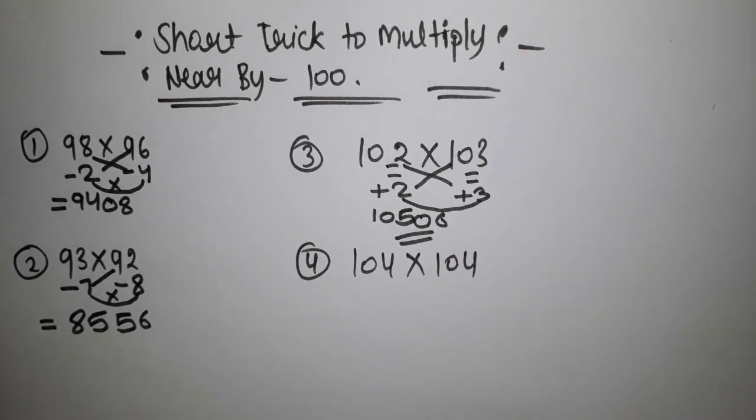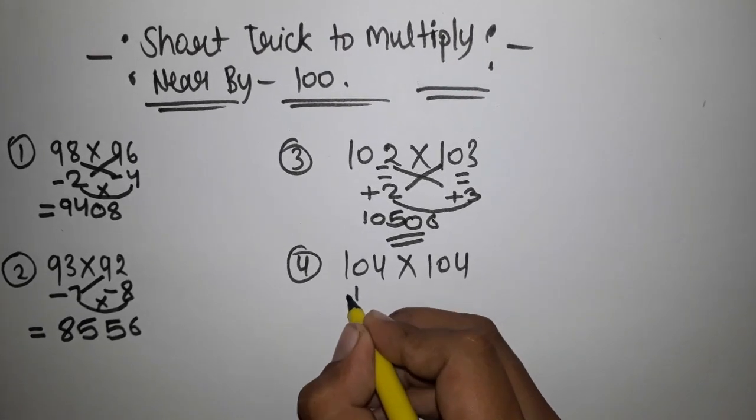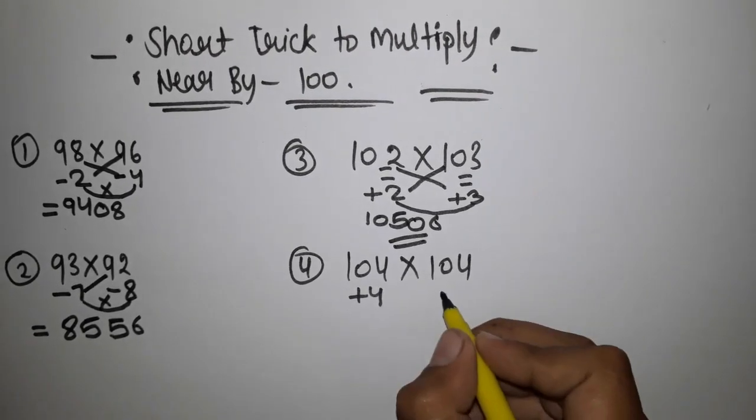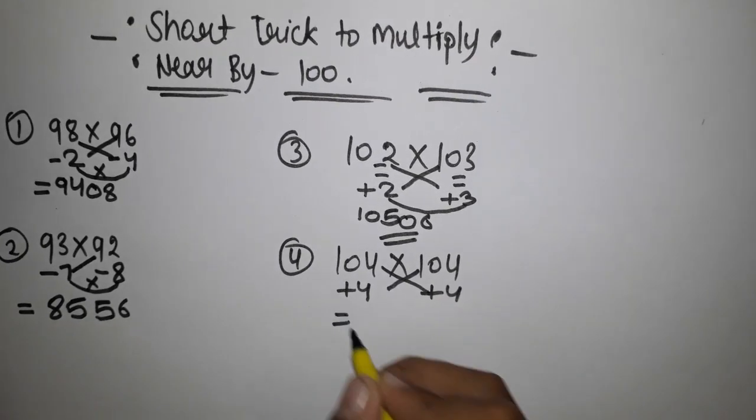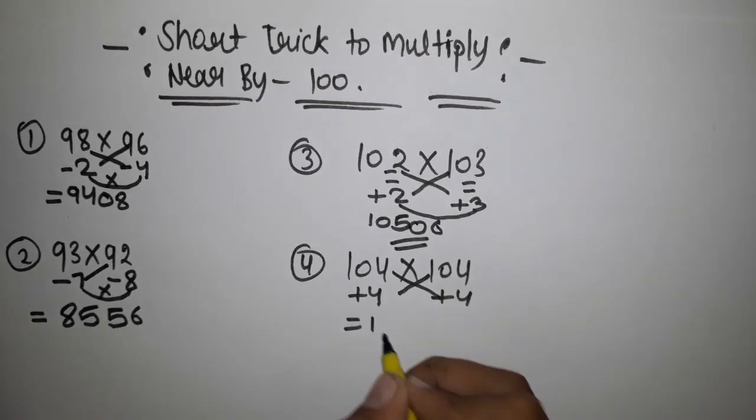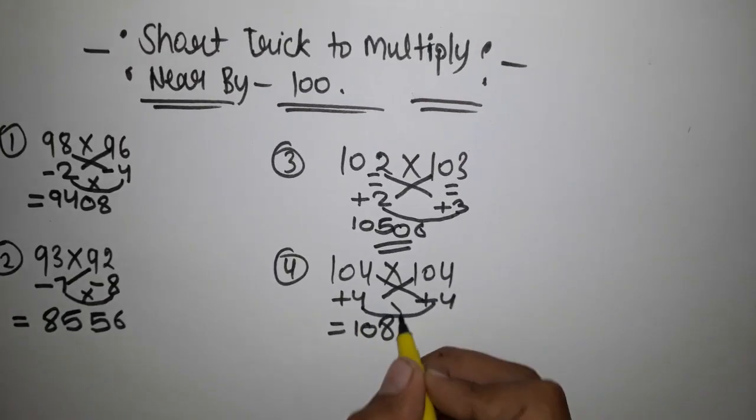Let's see the last example. 104 multiply 104. This is plus 4 from 100, and this is also plus 4 from 100. We have to plus this. 108, then 4 multiply 4 is 16.